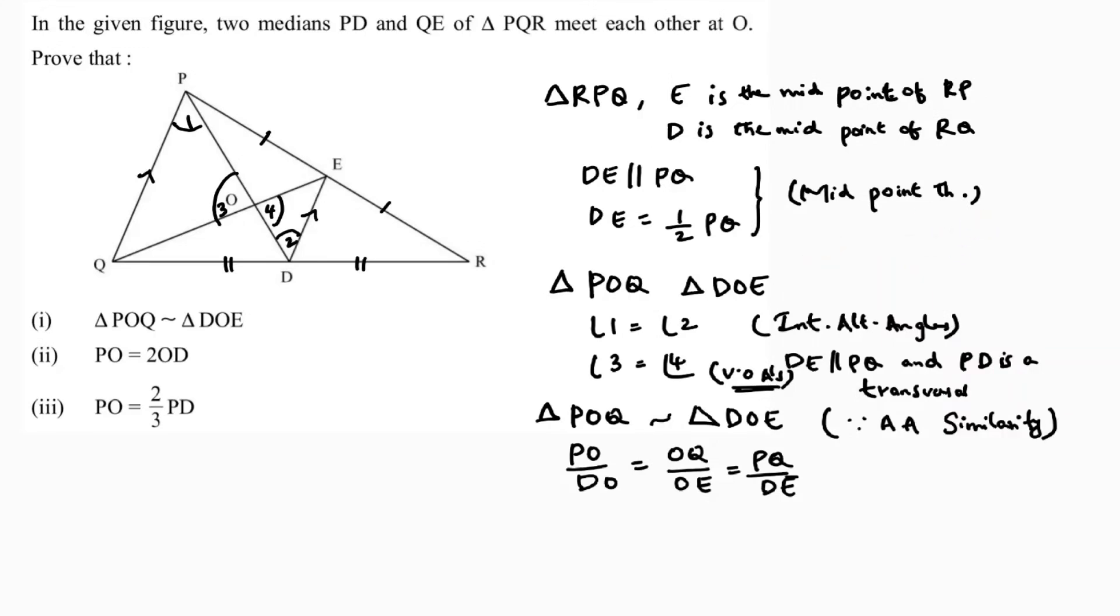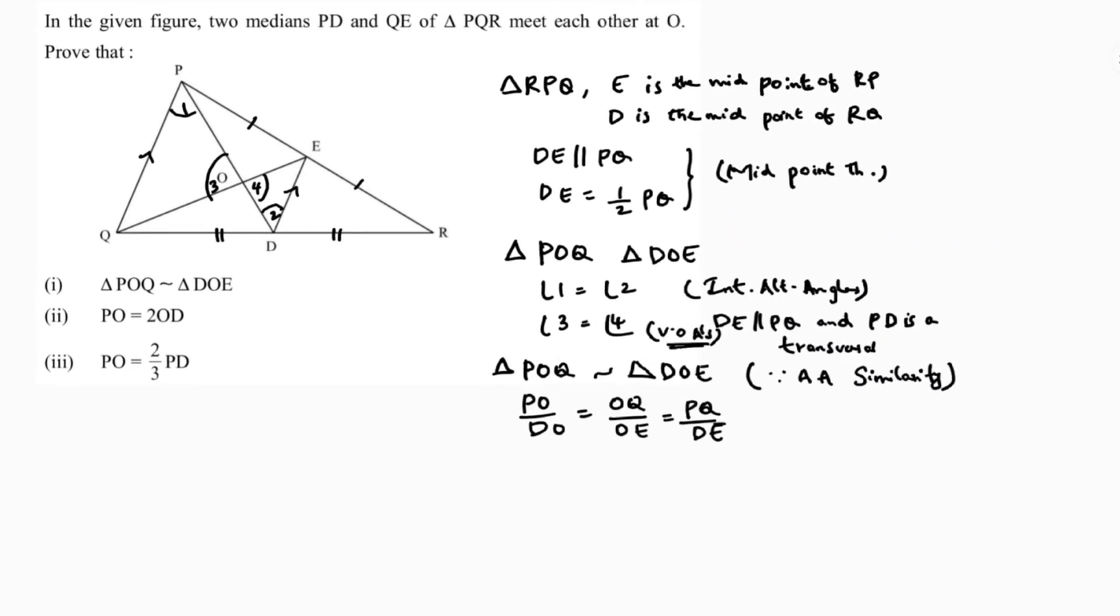So PO by DO equals 2DE by DE. DE cancels out, so PO is twice OD. This is the second answer: PO equals 2OD.